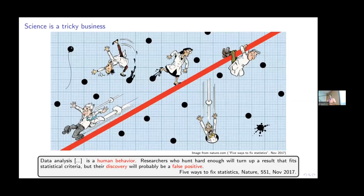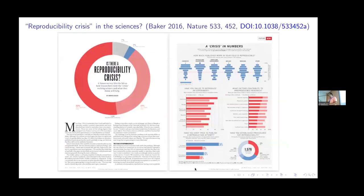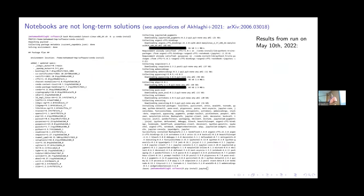Science is tricky. There's a figure published in Nature in 2015 or 2017 by several statisticians who argue that as much as we like to automate data analysis, in the end it's a human endeavor. They write: 'If you hunt hard enough, you'll turn up a result' — but it's probably going to be a false positive. This is the reproducibility crisis paper that Lourdes also mentioned yesterday. It's a big problem many of us know.